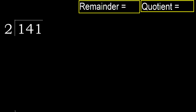141 divided by 2. 1 is less, therefore next. 14 is not less, therefore with 14 — 2 multiplied by which number is nearest to 14.